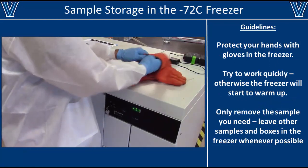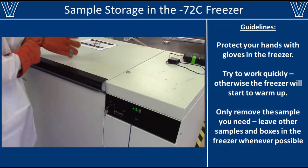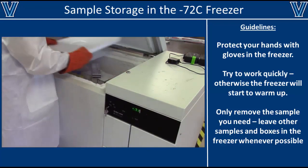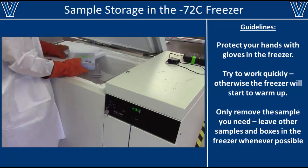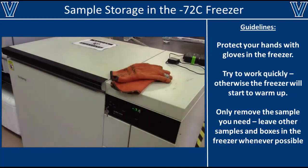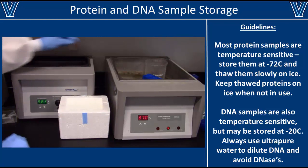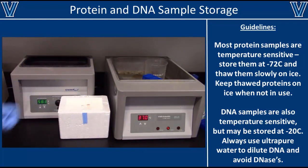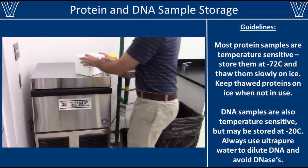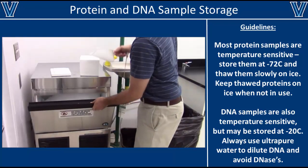No matter what kind of cells you are working with, you probably have to use the negative 72°C freezer at some point in your research. If you have to store any samples in the freezer, make sure you wear gloves to protect yourself from the extreme cold. Also, limit the amount of time you have the freezer open to prevent samples inside from thawing — the temperature inside can raise very quickly. Only remove the samples that you need, since freeze-thaw cycles can significantly damage many of the samples we work with. If you need ice, it is available in the Core Genomics Lab. Please only use the scoop provided to get ice, since other scoops may be contaminated. Do not use the ice for your food or drink.